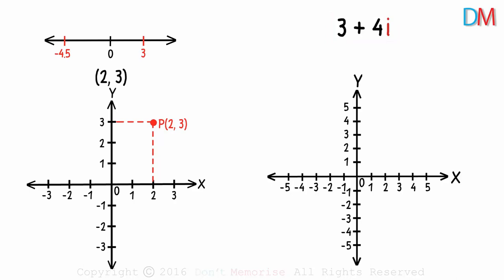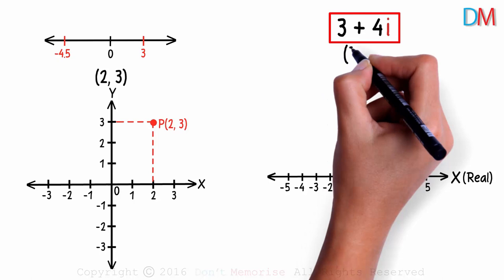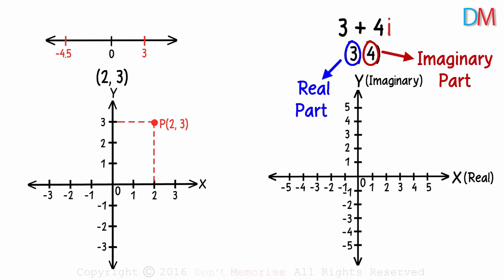A good idea would be to assume the x-axis as the real axis and the y-axis as the imaginary axis. So based on this, we can say that this complex number corresponds to the ordered pair 3 comma 4. 3 the real part and 4 the imaginary part.